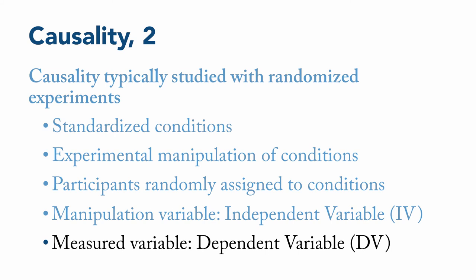So, a randomized experiment is generally considered the best way to determine if one variable truly causes changes in another, but it's not the only way.